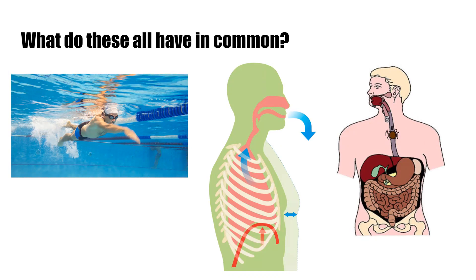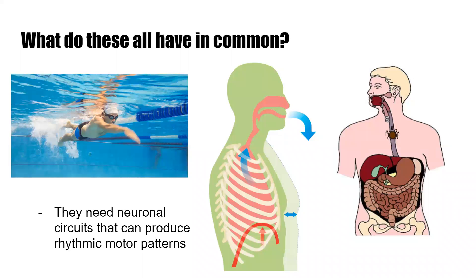So like how does your brain know you gotta put your foot here and then put this foot there. So they all need neuronal circuits that can produce rhythmic motor patterns. And what does that mean?